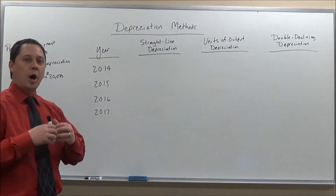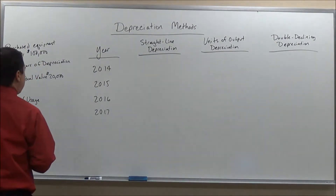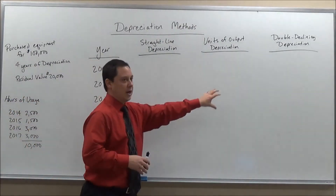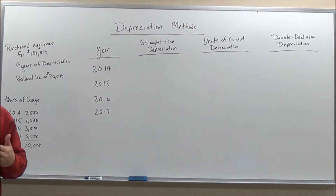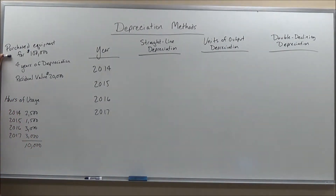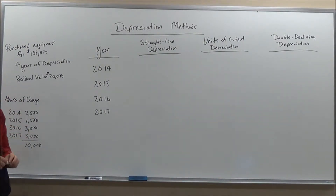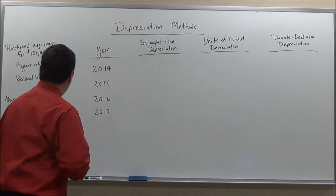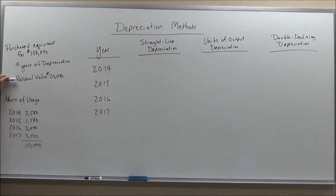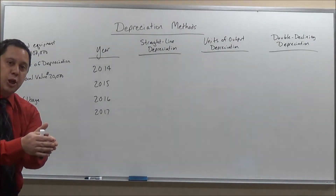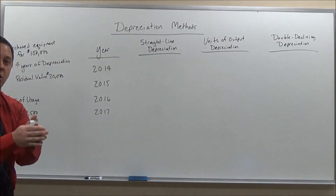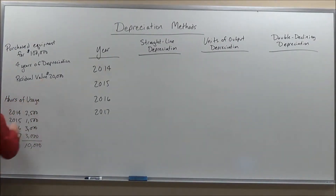I'm going to walk you through a sample problem. In this example, we have purchased equipment for $100,000, depreciated over four years. So we have four years of depreciation. We have a residual value of $20,000 — which may also be stated as salvage value — meaning after the four years, we will have $20,000 value still left in this equipment.